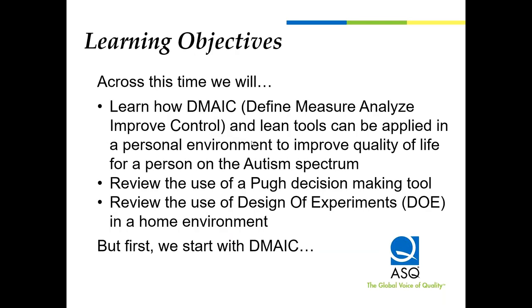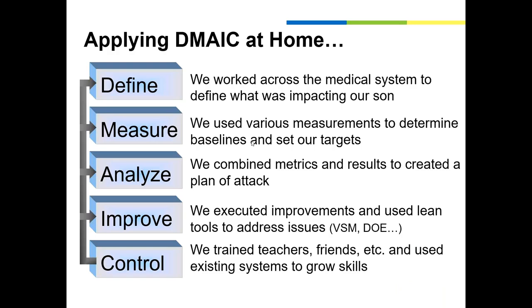We're going to learn how DMAIC can be applied in your own home environment to improve the quality of life for a person and how they can have control over their own quality of life as well. We used a lot of different tools across Adam's journey. He just turned 19 a week or two ago, and we continue to use basic quality tools to help him. We've used designs of experiments, Pew diagrams, all kinds of things.